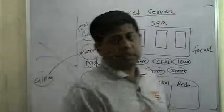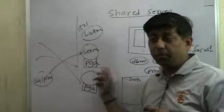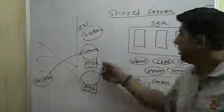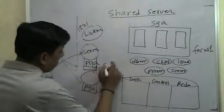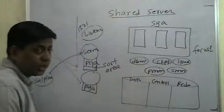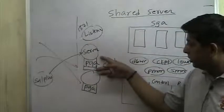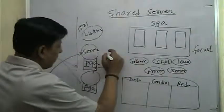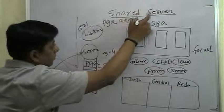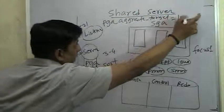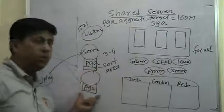Inside the PGA are the variables, session level information regarding the client, cursor variables, binding variables, and all PL/SQL stuff. Another important thing inside the PGA is the sort area where sorting happens, and there is a hash area for hashing. The PGA typically ranges from maybe three to four megabytes. The size is controlled by the parameter PGA_AGGREGATE_TARGET.